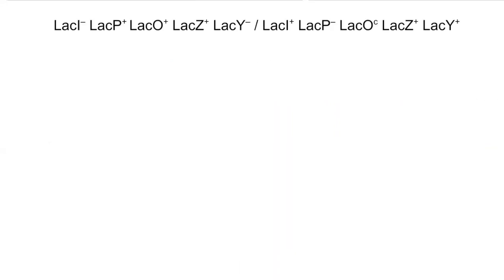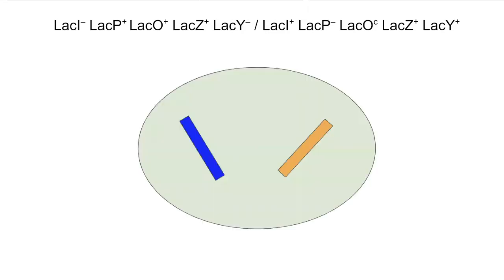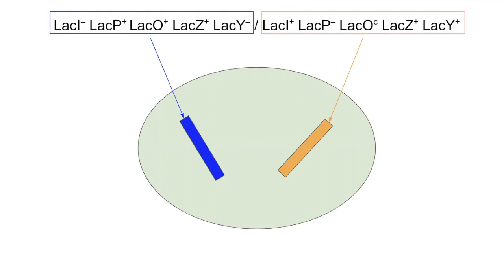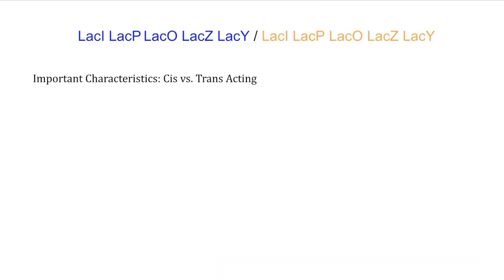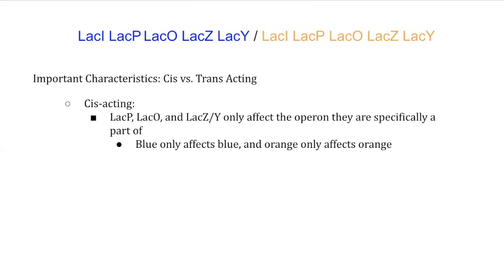Now let's return to the problem from the start of the video. These problems represent a scenario where you have injected two operons containing different mutations into a single bacteria cell. I like to frame these problems by asking myself: how do these mutations affect the bacteria's overall ability to produce the enzymes that break down lactose? We have to remember that certain components of the lac operon are cis-acting and trans-acting. Everything except the regulator is cis-acting, meaning the function of the wild-type or mutated forms of the promoter, the operator, or the structural genes only affects the operon that they are specifically a part of.